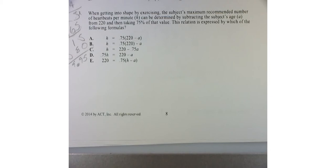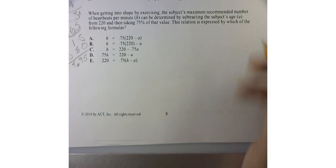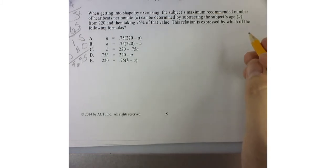This problem says: when getting into shape by exercising, the subject's maximum recommended number of heartbeats based on age can be determined by subtracting the subject's age from 220 and then taking 75% of that value.